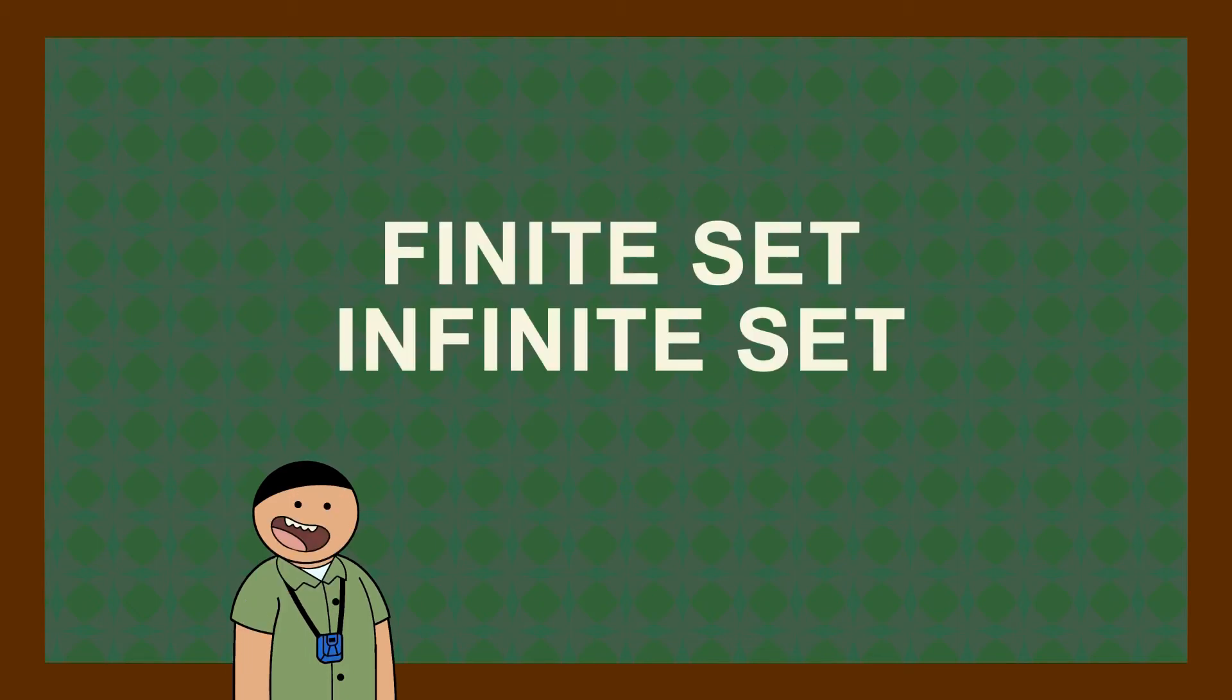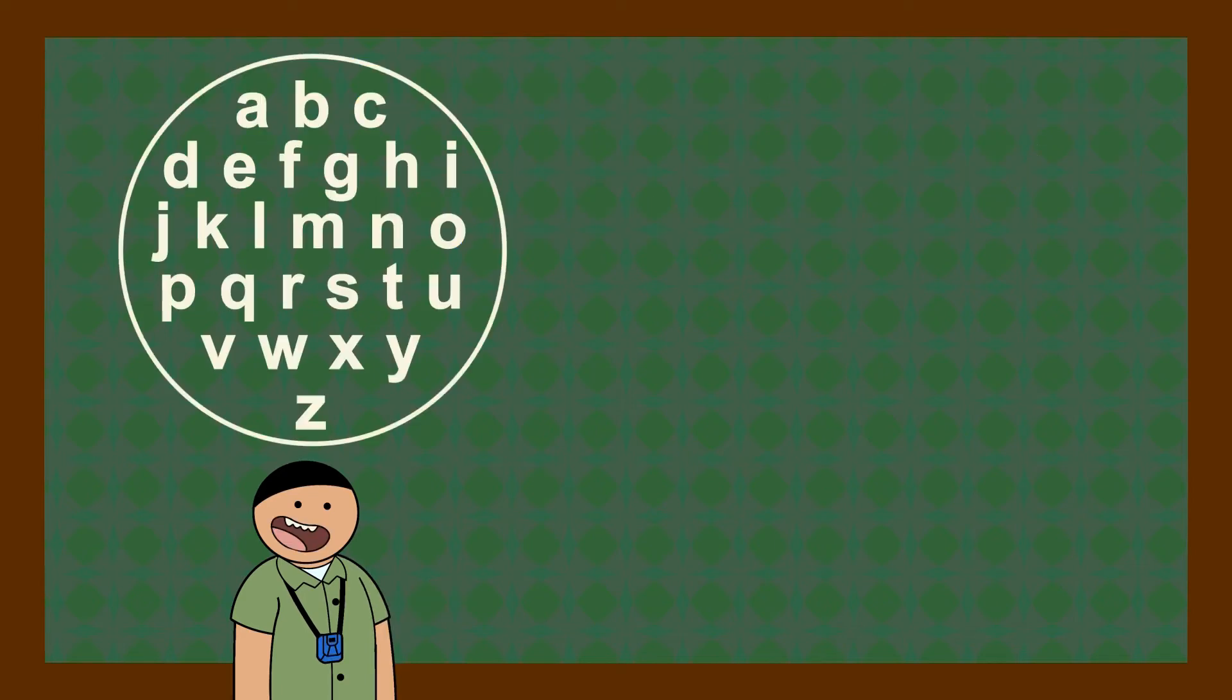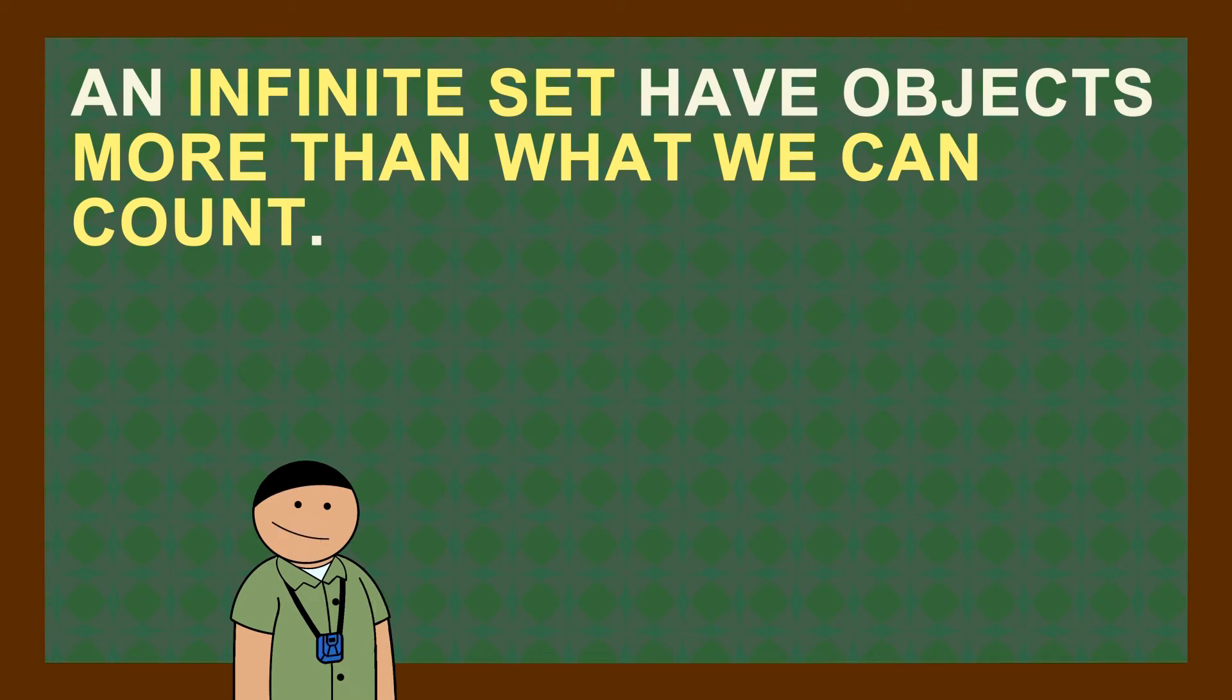Now let's talk about finite set and infinite set. A finite set is a set in which we can list all the objects and we know how many they are. For example, the 26 letters of the English alphabet. We can write the set as this one as long as we know that there are 26 of them. An infinite set, well, let's just say have infinite objects that there's always more than we can count.